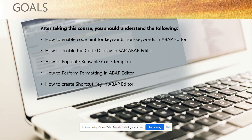We will see how you can, instead of typing everything out, use the tab key to autocomplete — just like Google, where you get everything automatically. In SAP, it's a good thing that you get everything, and it was there before Gmail had that automation.